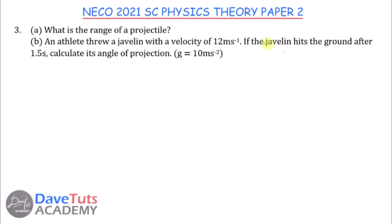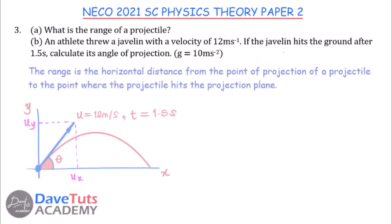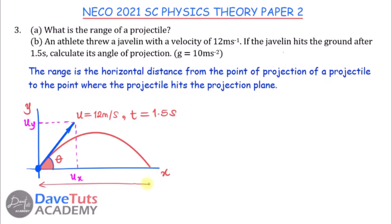If the javelin hits the ground after 1.5 seconds, we calculate its angle of projection, taking g = 10 m/s². The range is the horizontal distance from the point of projection to where the projectile hits the projection plane — that range is defined in this diagram.